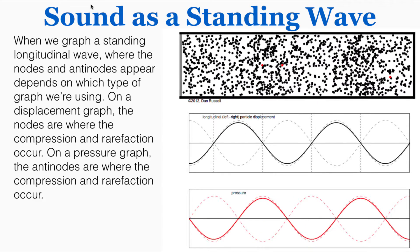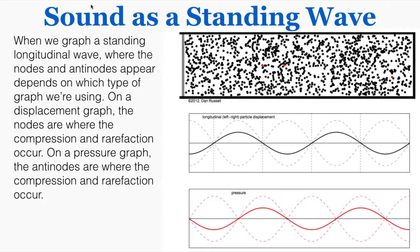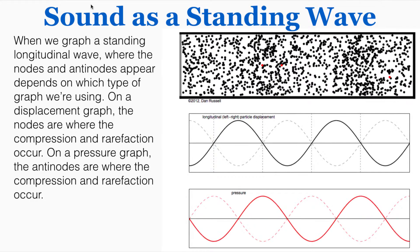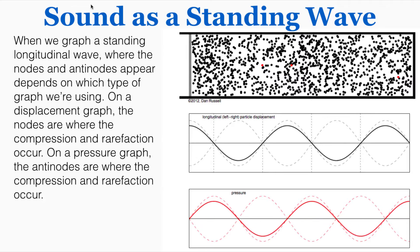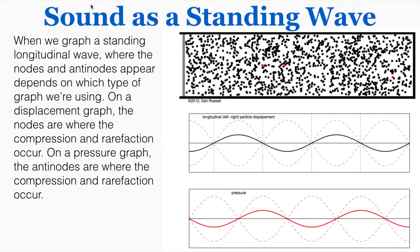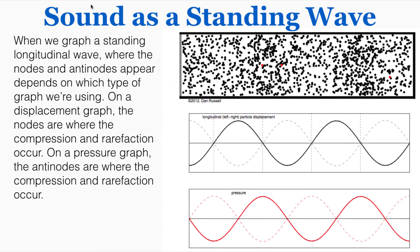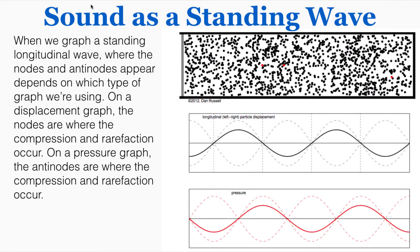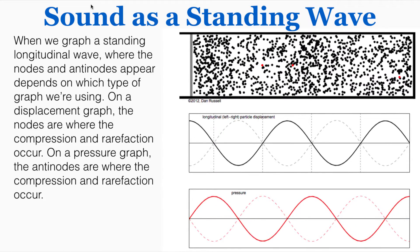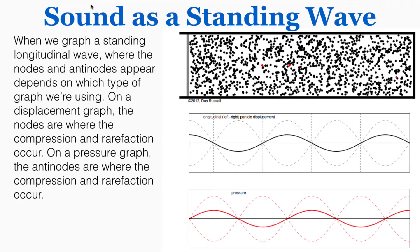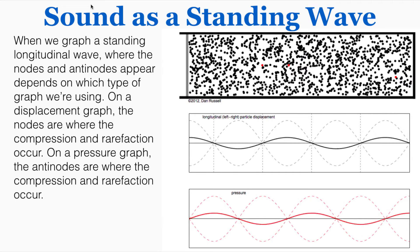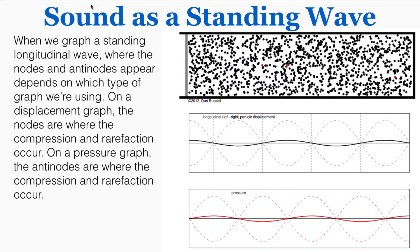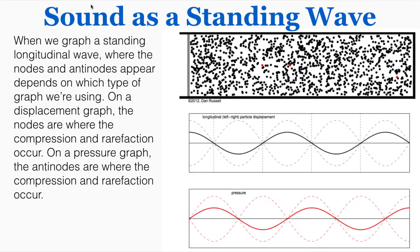Because those particles aren't moving, on a graph that measures the displacement of the particles on the y-axis, those particles that aren't displaced would be nodes. They just stay at zero throughout the whole time. You can see that on the displacement graph, the nodes line up with the particles that aren't moving in the animation, which is also where the compressions and rarefactions in the wave occur.